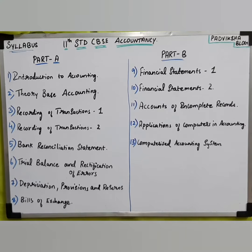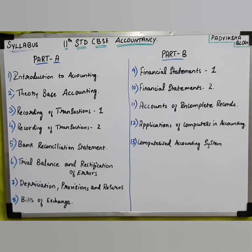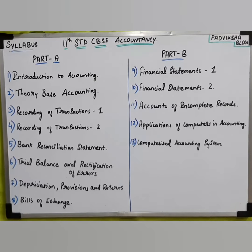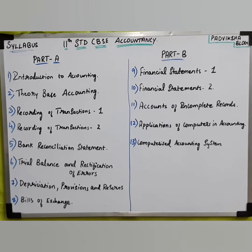First, let's look at the 11th standard syllabus. The 11th standard CBSE syllabus is divided into two parts — Part A and Part B. In Part A we have eight chapters, and in Part B we have five chapters. We will first concentrate on Part A, and then move to Part B videos.